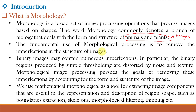Even binary images may contain many imperfections. In particular, the binary regions produced by simple thresholding are distorted by noise, as we just saw in the previous slide. So, morphological image processing pursues the goal of removing these imperfections by accounting for the form and structure of the image.